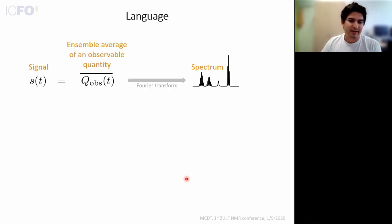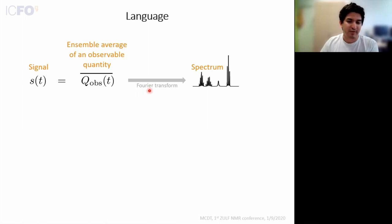To do that, we're going to start with the idea of what the NMR spectrum is measuring. Generally, that's some bulk quantity of the NMR ensemble which is physically measurable, such as the total magnetization of the sample versus time. We then Fourier transform that into a spectrum, which gives us the frequency and amplitude of the independent modes of magnetization in our system.